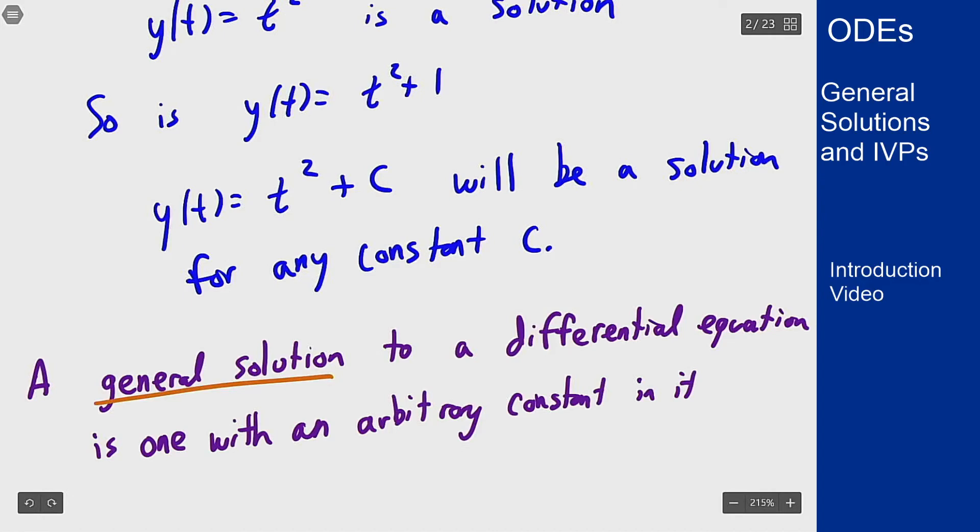This is basically like this t² + c thing where I have this extra c that I could then pick if I want to but any constant c will solve the problem. Now what about determining the c? Well if I want to tell you what this c has to be there has to be more information and that information will generally be given in the form of the function value at a point.